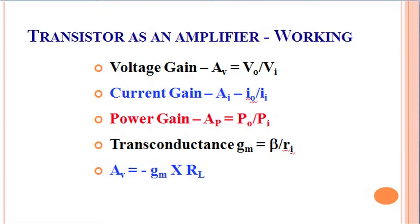AV represents the amount of voltage gain. AI represents the amount of current gain, and corresponding to this we have the power gain, which is output power divided by the input power. The term transconductance is the ratio of beta to the input resistance. The net voltage gain can be calculated as minus of the transconductance multiplied by the load resistance.